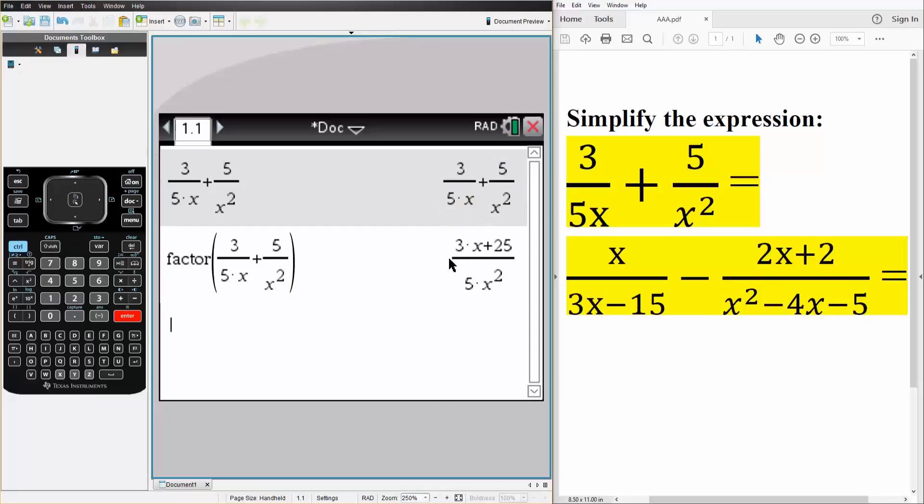So the final answer would be 3x plus 25 divided by 5x squared, and we'll do another problem.